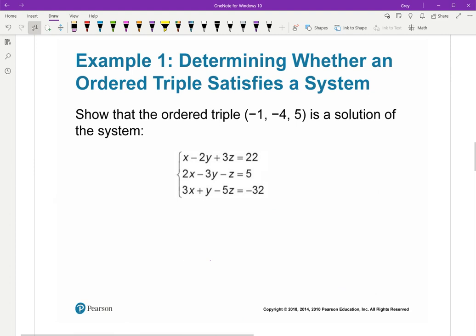Just like we did before, to show that an ordered triple is a solution of the system, this is X, this is Y, this is Z. I have to go plug those in. X minus 2Y plus 3Z equals 22. So I'm going to plug in for X and Y and Z, and I always put parentheses about numbers when I'm plugging in.